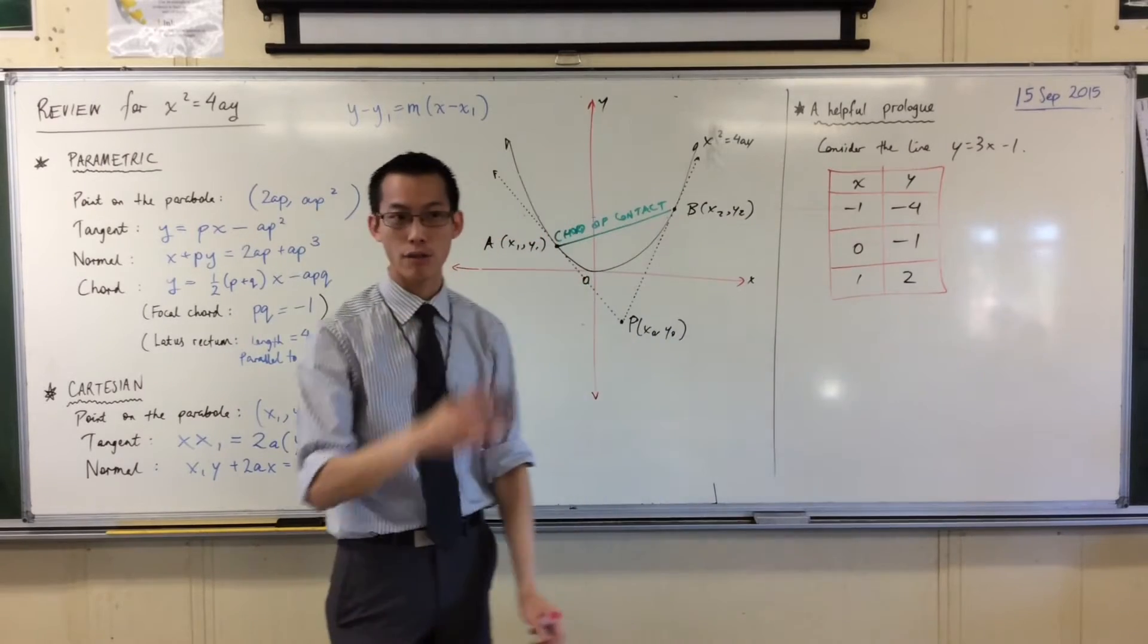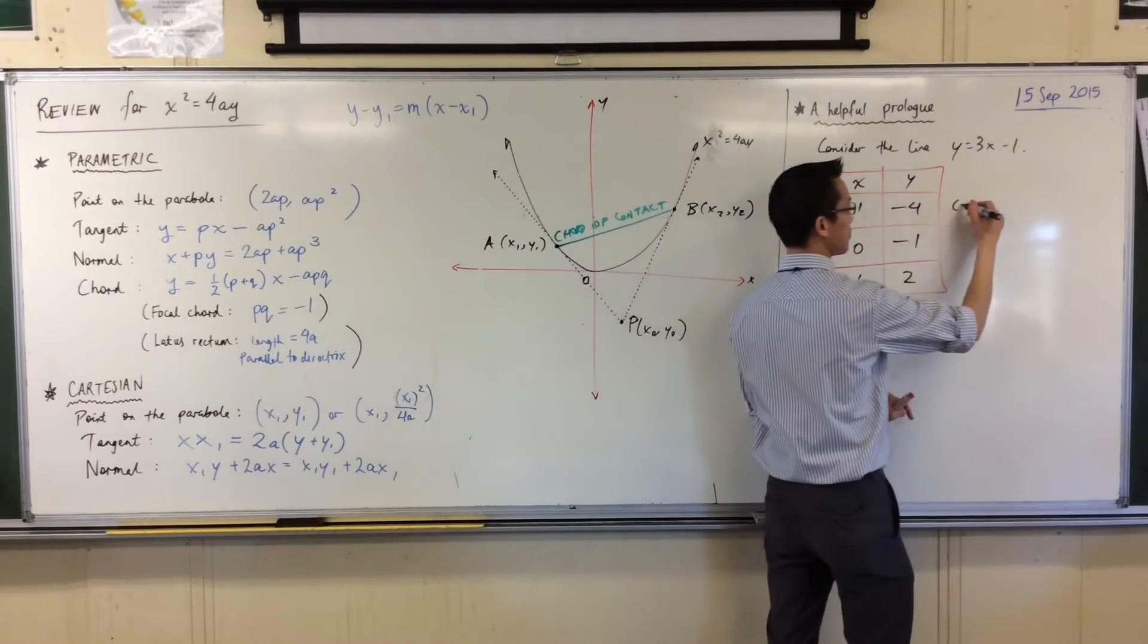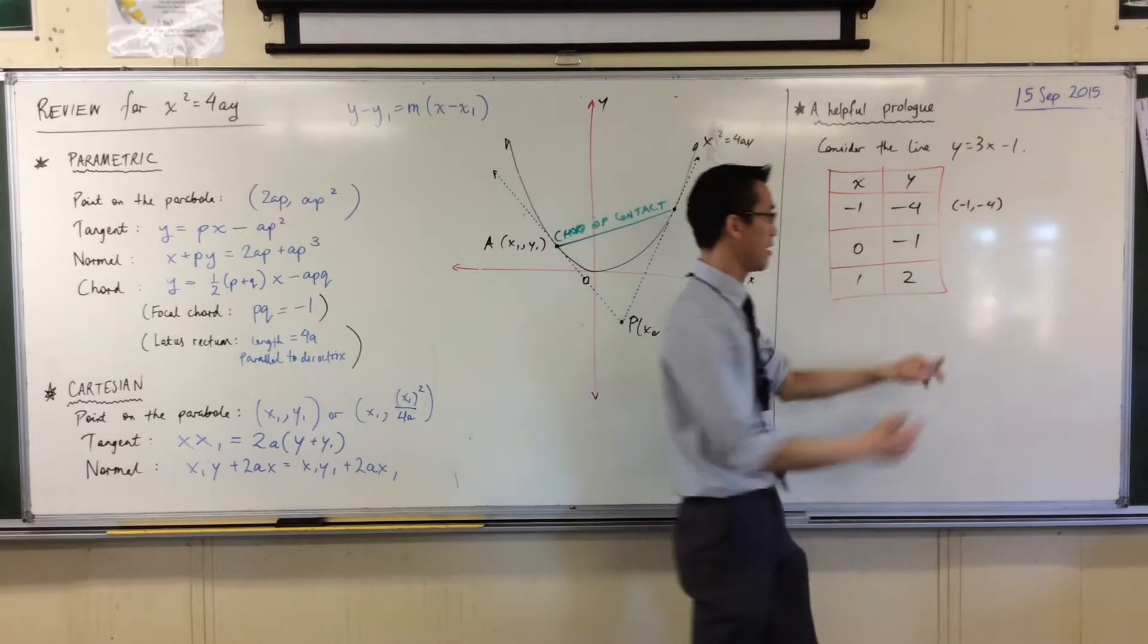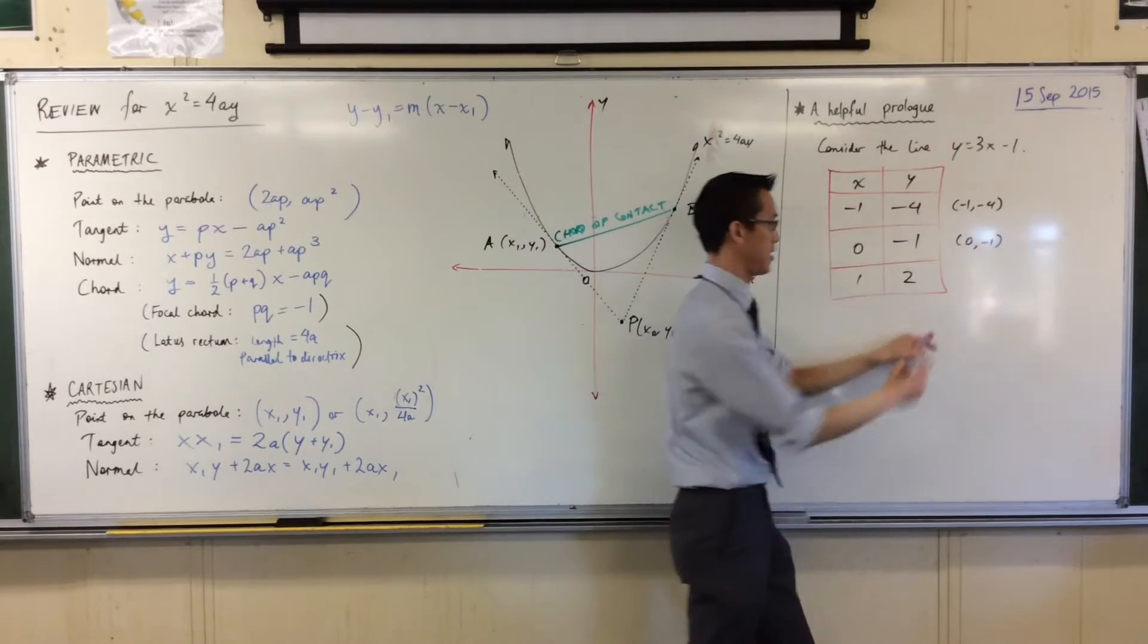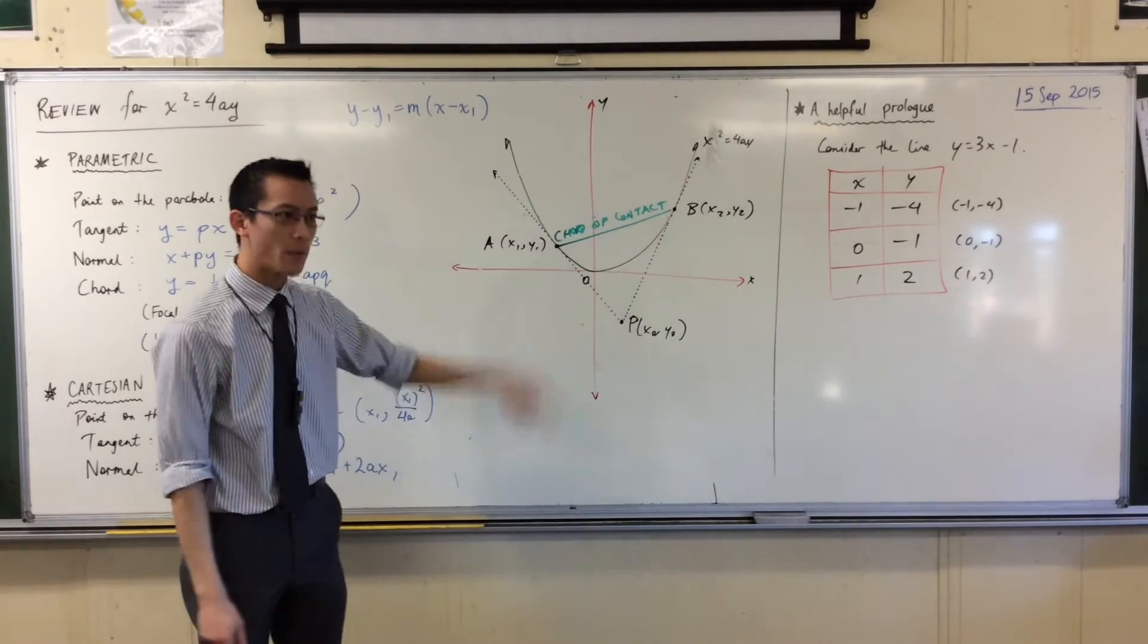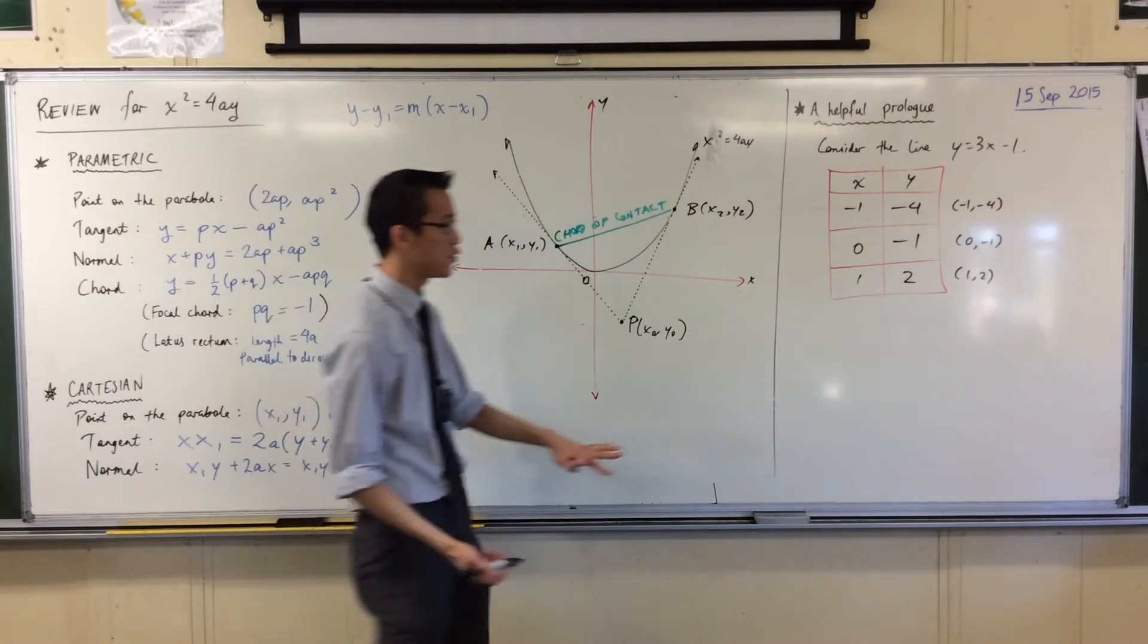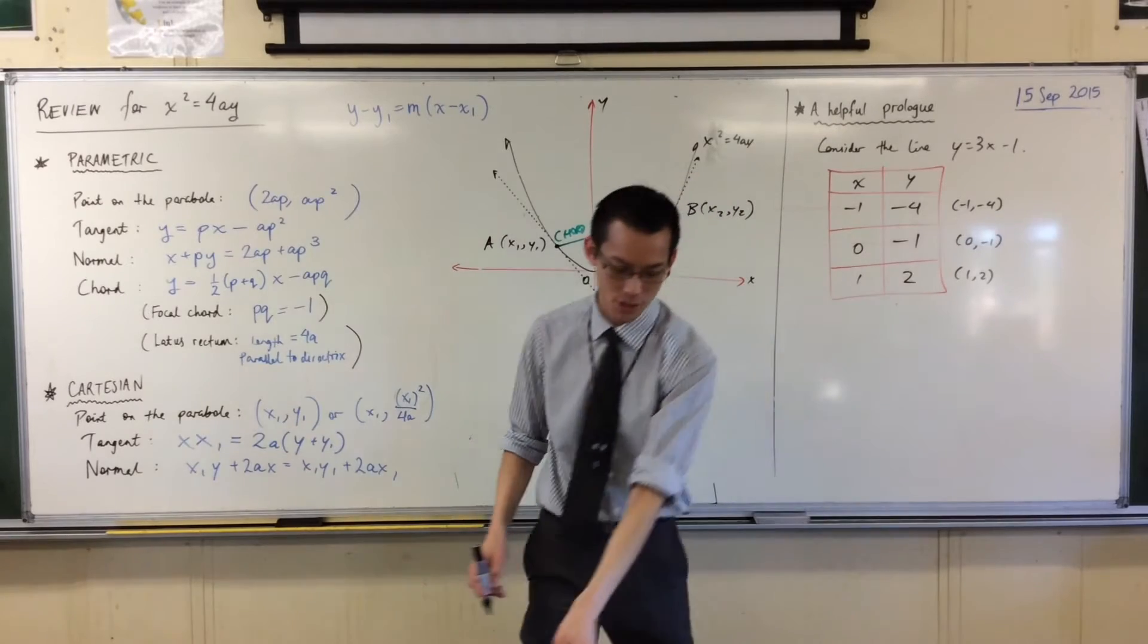So now I have it. Are you happy with that? And I could graph this. I could say that this means (-1, -4) should be on that line, (0, -1) should be on that line, and (1, 2) should be on that line. Now this is the way we normally did this, but now I want you to reverse this a little bit. I want you to imagine that we hadn't seen this table of values. We're going to do something different.